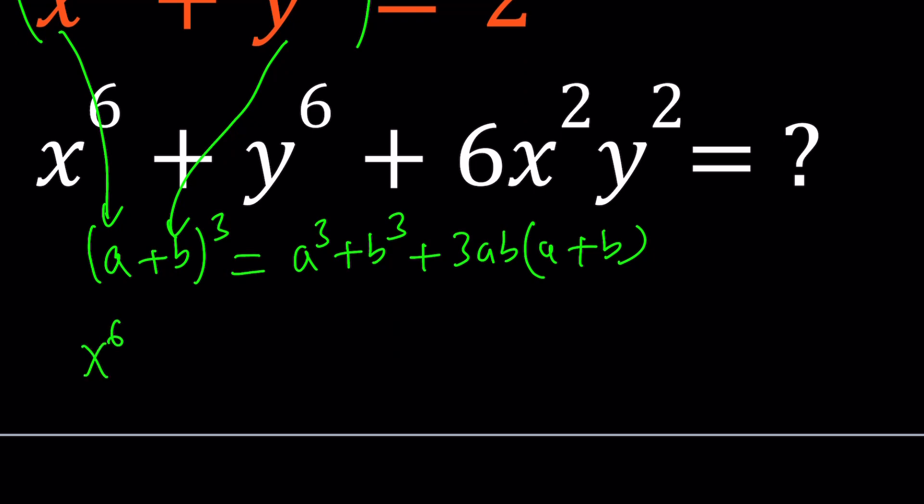x to the 6th, because... maybe I should write it this way first. So we're going to get x squared to the 3rd plus y squared to the 3rd plus 3x squared y squared times x squared plus y squared.